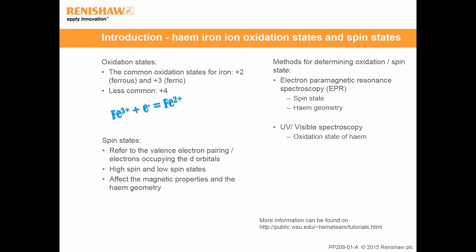The heme iron itself has different oxidation states. It can be ferrous or ferric. The Fe2+ ferrous form is the reduced form and the Fe3+ ferric form is the oxidized form. You can also get Fe4+ ions, but they're less common. Heme also has different spin states. The spin state refers to how the valence electrons occupy the d orbitals. In the low spin state, all electrons are paired; in the high spin state, some electrons are unpaired. The electron pairing affects the magnetic properties and the heme geometry. Through determining the spin state, the oxidation state can be deduced.